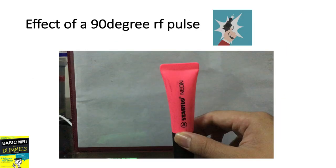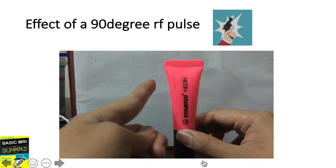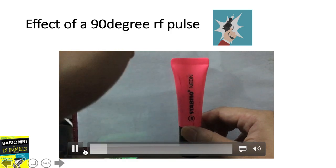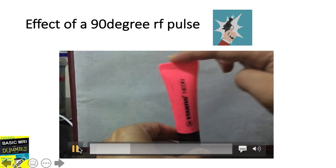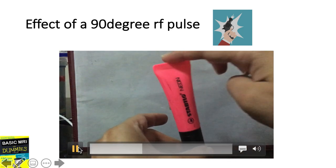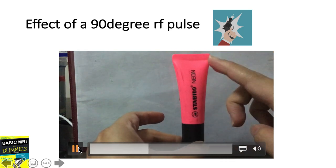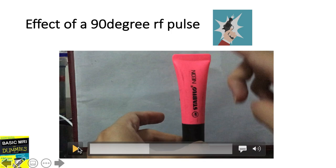Now, let's imagine that this highlighter is the proton. It spins this way, in the same direction of the magnet, in the z-axis. Since this is the longitudinal axis, we will refer to this as the longitudinal magnetization.